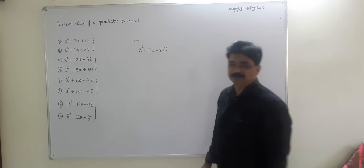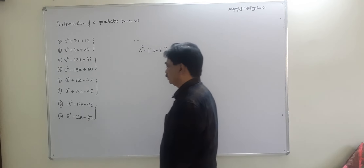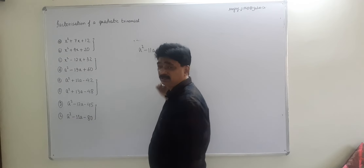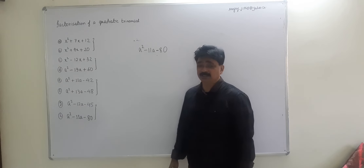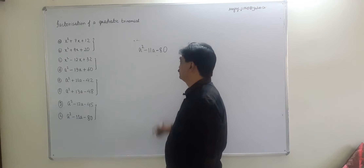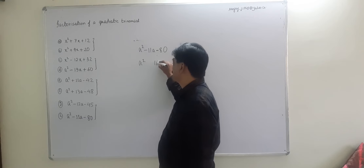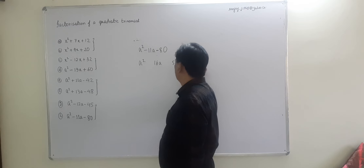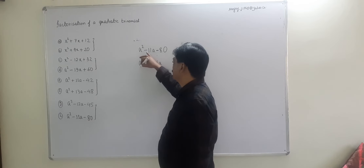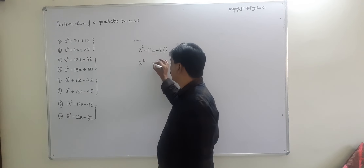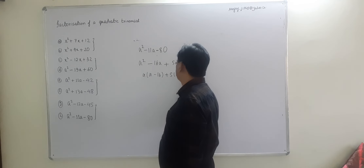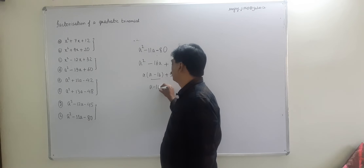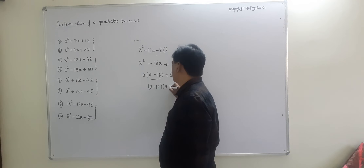Now: a² - 11a - 80. Again c is negative, so find the difference. 16 × 5 = 80 and 16 - 5 = 11. The negative sign goes to the larger number. So: a² - 16a + 5a - 80 = a(a - 16) + 5(a - 16) = (a - 16)(a + 5).